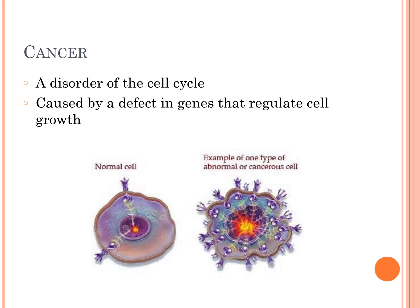Something that can go wrong during mitosis is cancer. Cancer is a disorder of the cell cycle caused by a defect in the genes that regulate cell growth. Mitosis produces a defective cell that has a genetic defect causing it to grow and reproduce uncontrollably with no regulation of the cell cycle. That bad cell will pass on that defect to every cell after it, causing a mass or tumor to grow.